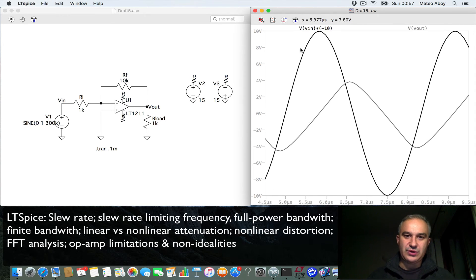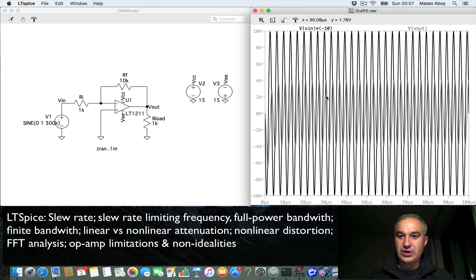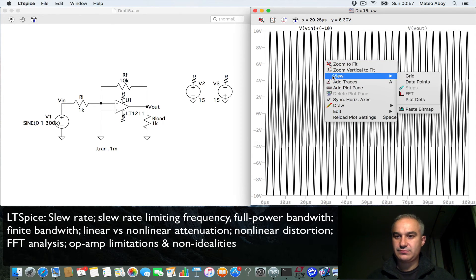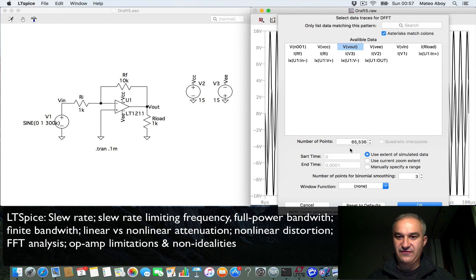Now I'm going to use this opportunity to actually show you also how to do an FFT. If you right click, you go to view. You can do an FFT. You're going to do an FFT of the input, of the output. Actually, let me do the input first. I'm going to use a Blackman window. In another video tutorial, I'll show you these window functions and what are they good for.